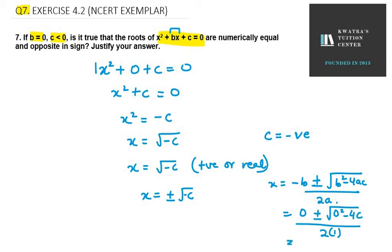You are left with under root 4c over 2. Under root 4c can be written as 2 under root c. 2 under root c over 2, so 2 and 2 are cancelled out. So we can have value as plus minus under root c.